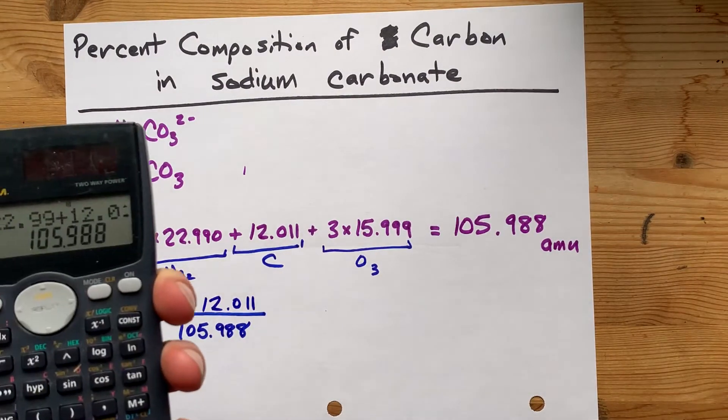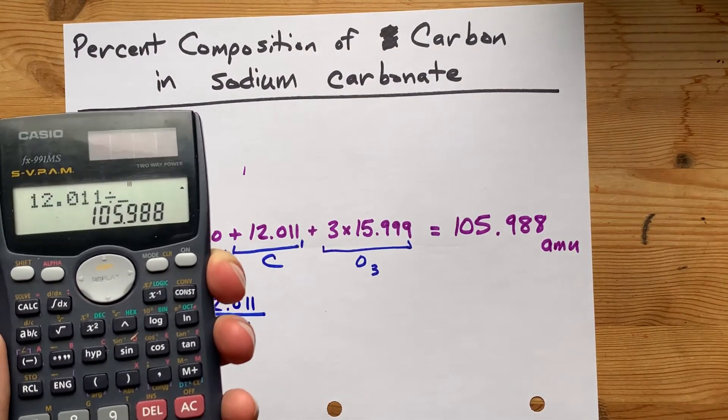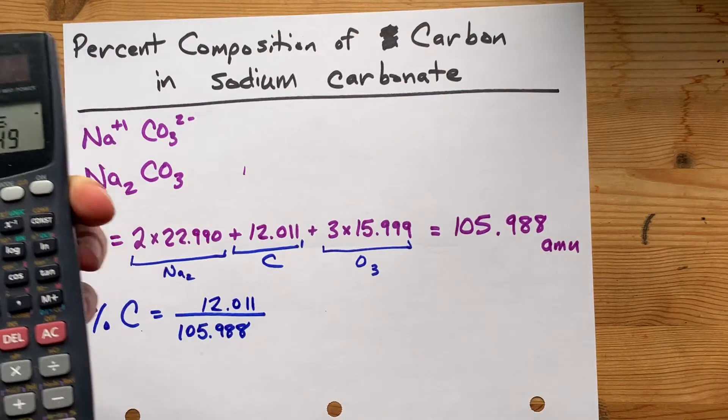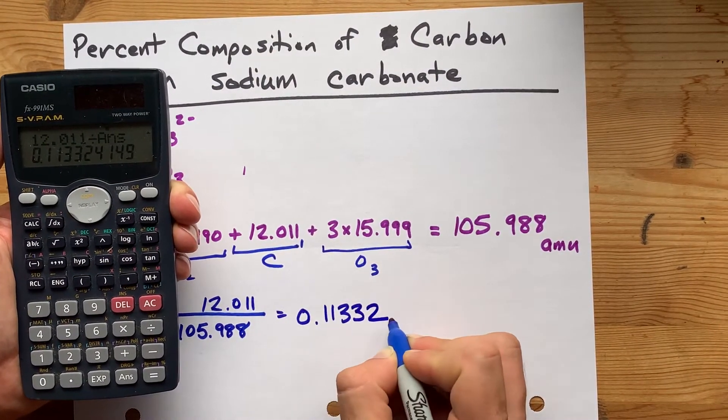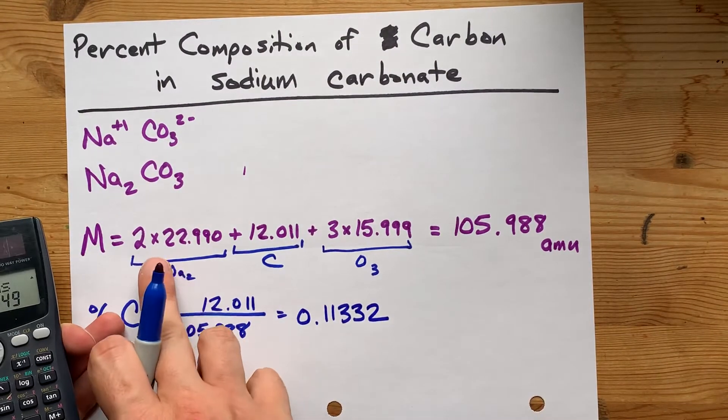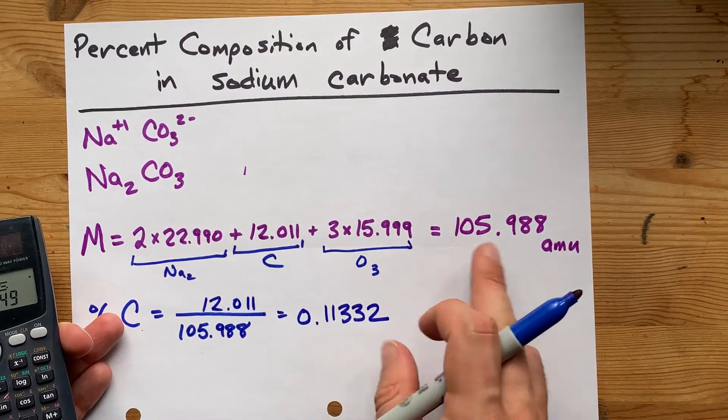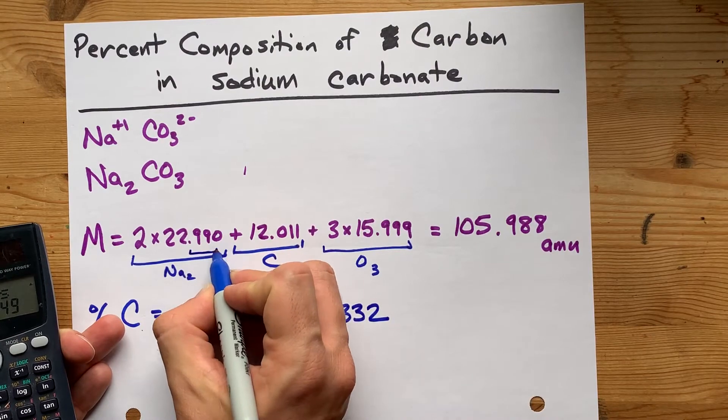12.011 out of that total gives me 0.11332. Now, when I add these together, I need, well, I have three decimal places,